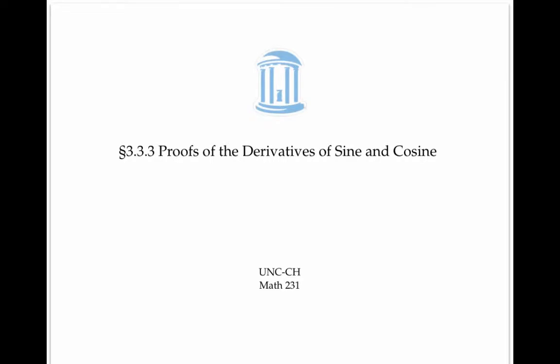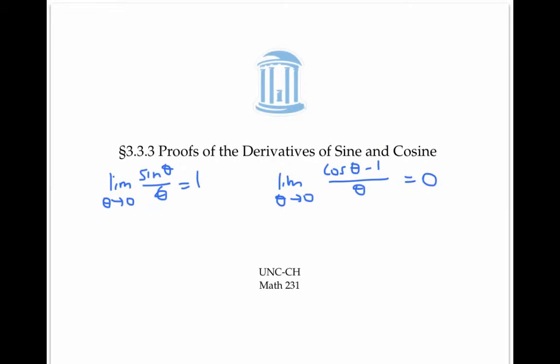In this video, I'll give proofs for the two special trig limits. I'll also prove that the derivative of sine is cosine, and the derivative of cosine is minus sine.